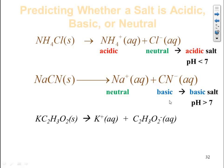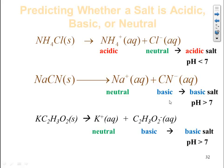Potassium acetate dissociates into potassium ions and acetate ions. Is potassium one of the neutral cations we memorized? Yes. Is acetate one of the neutral anions we memorized? No — so it adds basicity. With a neutral cation and a basic anion, the overall salt is expected to be basic, with a pH greater than 7.